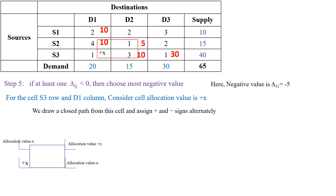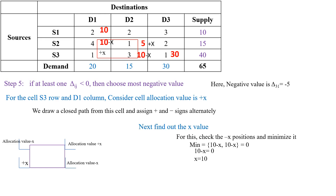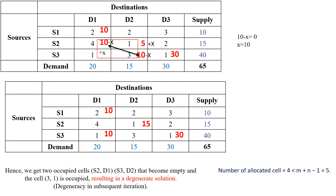We find the x value by checking the minus x positions in the closed path. The minus x positions give 10 minus x and 10 minus x. To minimize, we set 10 minus x equal to 0, giving x equals 10. Substituting this x value at the closed loop path gives new allocations. The new table gives modified allocations. However, the number of allocations is now only 4, which is less than m plus n minus 1. Two occupied cells — S2 row and D1 column, and S3 row and D2 column — become empty, and the cell S3 row and D1 column is occupied, making this a degenerate solution.